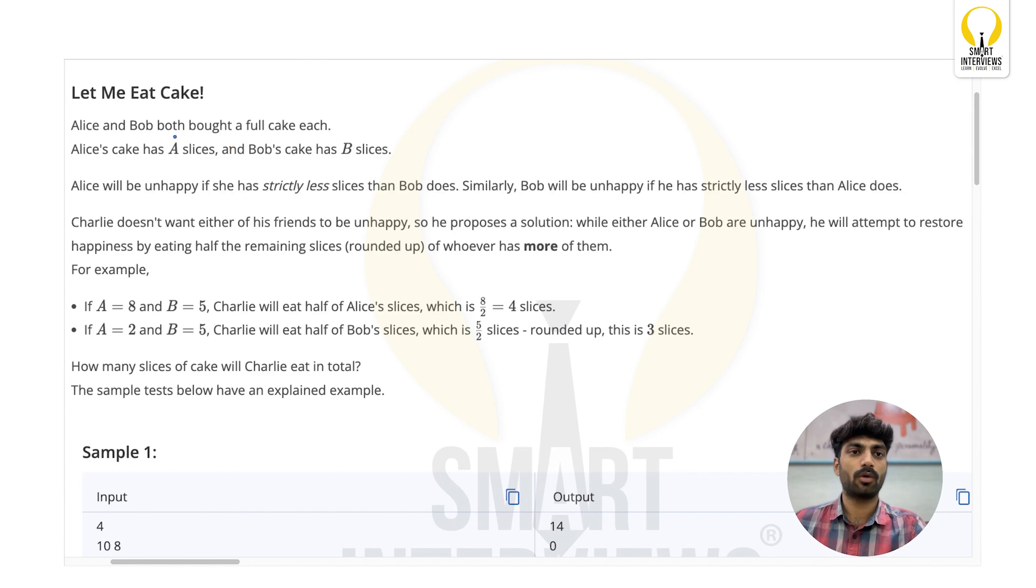The problem statement says that Alice and Bob both bought a full cake each. Alice's cake has A number of slices and Bob's cake has B slices. Alice will be unhappy if she has strictly less slices than Bob does, and similarly Bob will be unhappy if he has strictly less slices than Alice. So A represents Alice's cake slices and B represents Bob's cake slices.